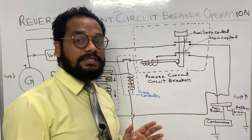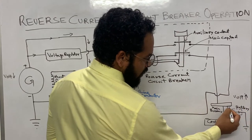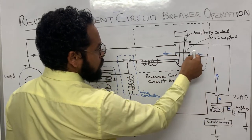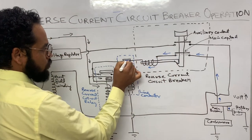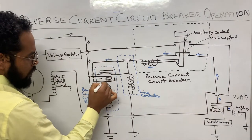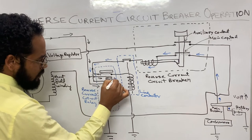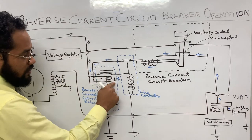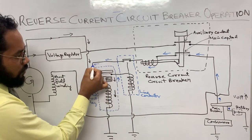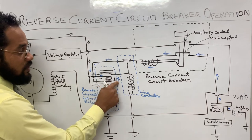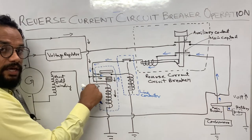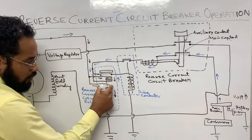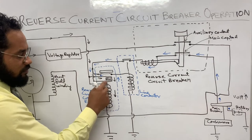The current flowing from the battery end towards the generator is called reverse current. It goes through the main contact, through the coil, through the line contactor contact to the current coil — and the reverse current flows in the opposite direction through the current coil. Since it is energized in the opposite direction, the magnetic effect of the current coil will not assist the magnetic effect of the voltage coil. Both magnetic effects are opposing, so the core gets demagnetized or neutralized.